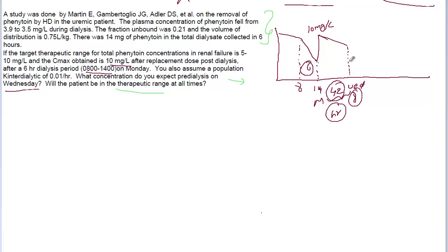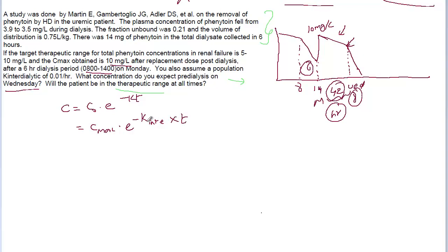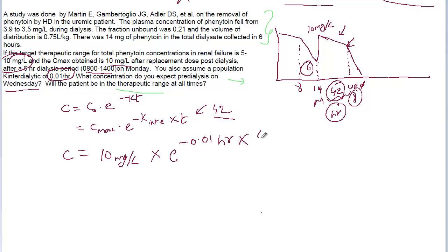Now we need to find the concentration expected pre-dialysis on Wednesday. We use the formula C = C0 · e^(−kT). Here, C0 is Cmax, and k is the interdialytic elimination rate constant. The time difference between dialysis time points is approximately 42 hours. So the concentration equals 10 mg/L × e^(−0.01 hr⁻¹ × 42 hr), which gives us 6.57 mg per liter.